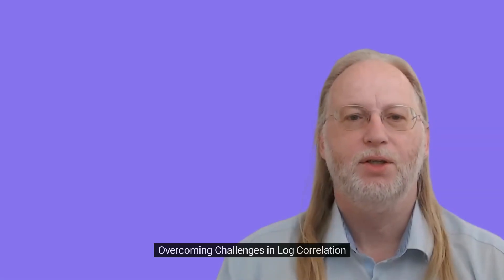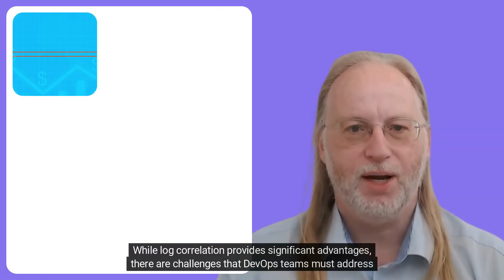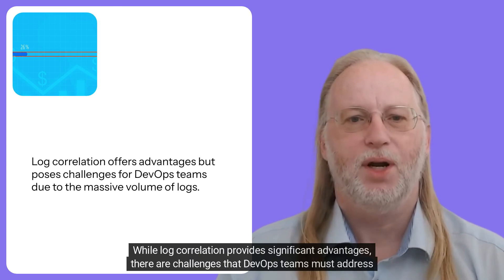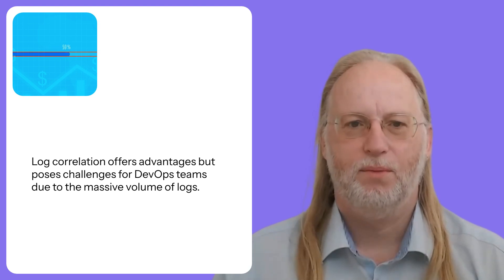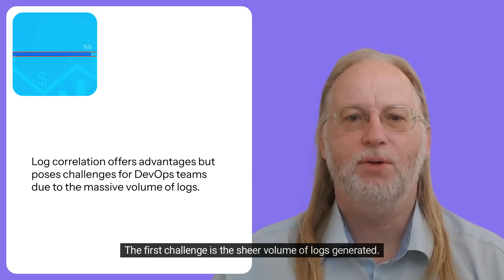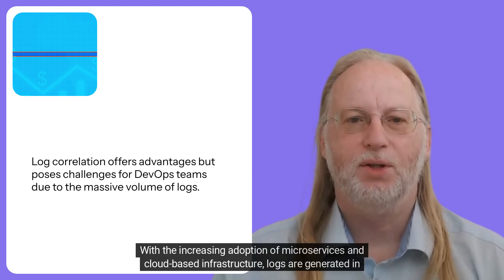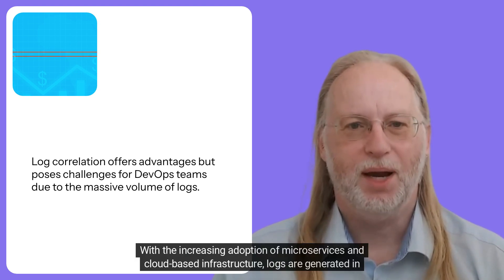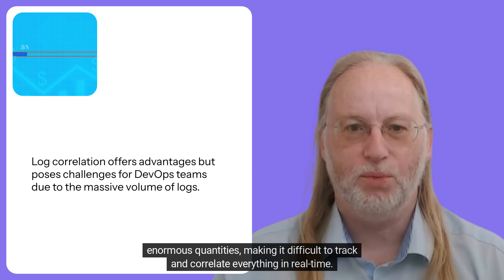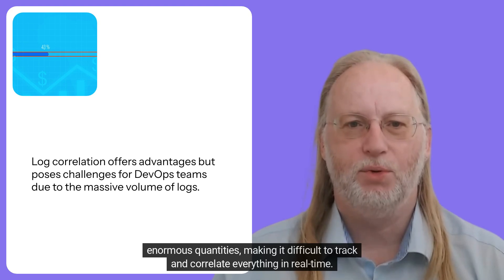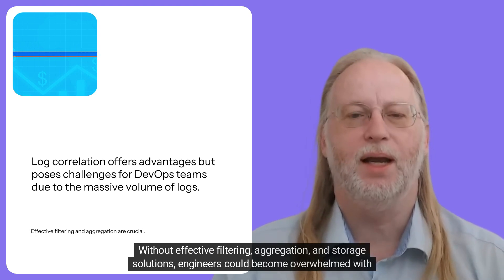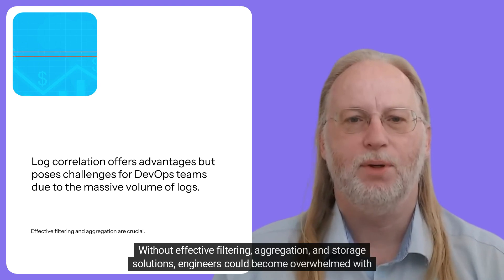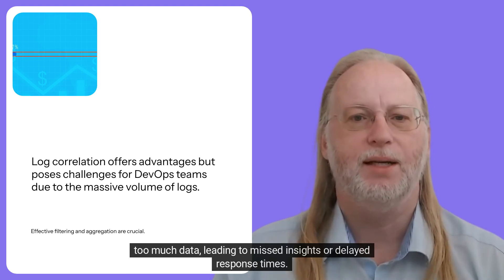While log correlation provides significant advantages, there are challenges that DevOps teams must address to fully leverage its potential. The first challenge is the sheer volume of logs generated. With increasing adoption of microservices and cloud-based infrastructure, logs are generated in enormous quantities, making it difficult to track and correlate everything in real time without effective filtering, aggregation, and storage solutions.